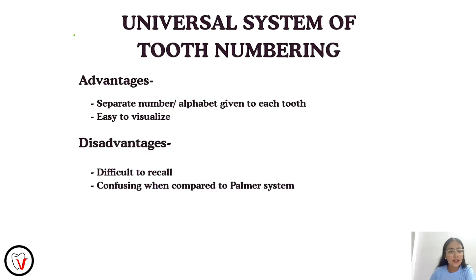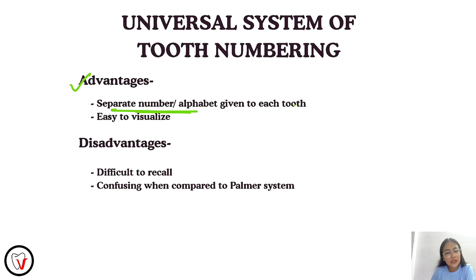Coming to the advantages of the universal system of tooth numbering: separate numbers and alphabets are given to each tooth, which addresses the main disadvantage of the Palmer system. It is also very easy to visualize. Coming to the disadvantages: it is difficult to recall and confusing when compared to the Palmer system.